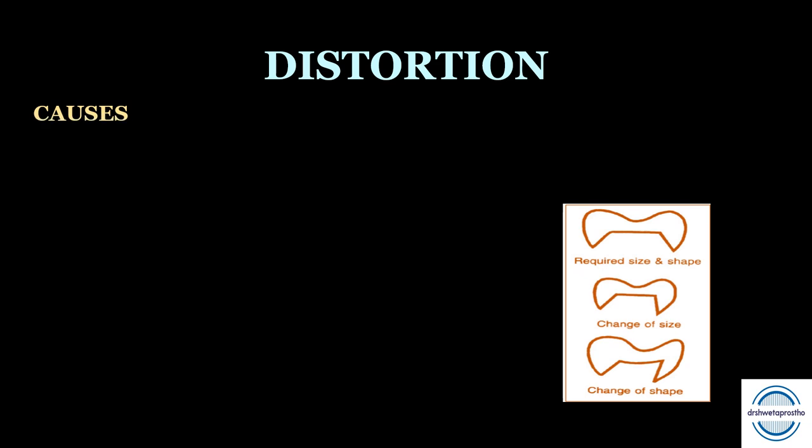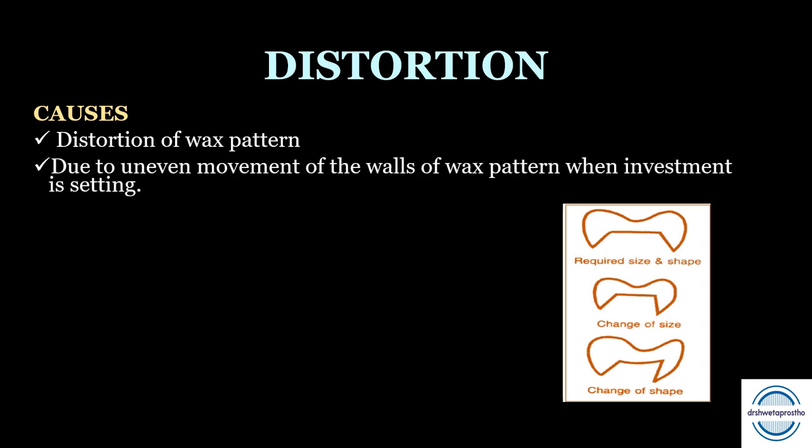Distortion means when we don't get the required size and shape of the casting — there is a change in size and shape leading to misfit of the casting. This can be caused by two reasons: distortion of the wax pattern during fabrication, and uneven movement of the walls of the pattern when the investment is setting.